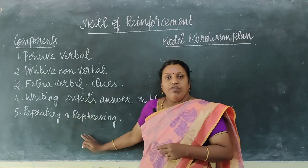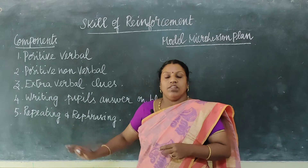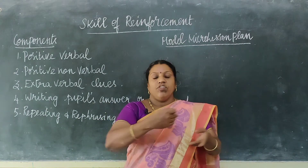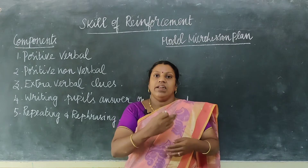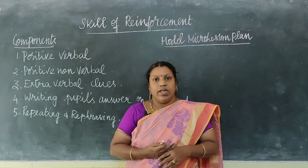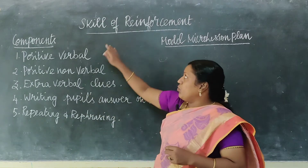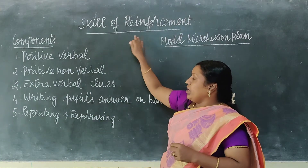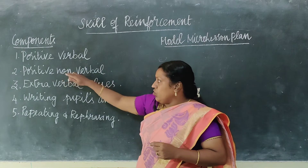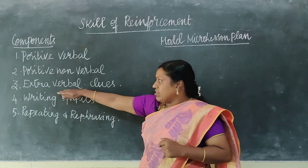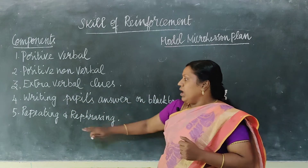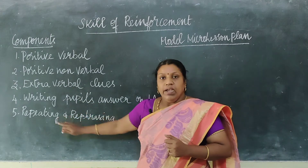And then there is repeating and rephrasing — what is the answer given by a student, it will be repeated by another student, rephrased, redirected, and rechanged. So the components of the skill of reinforcement are: positive verbal reinforcement, positive non-verbal reinforcement, extra verbal cues, writing the student's answer on the blackboard, and repeating and rephrasing.